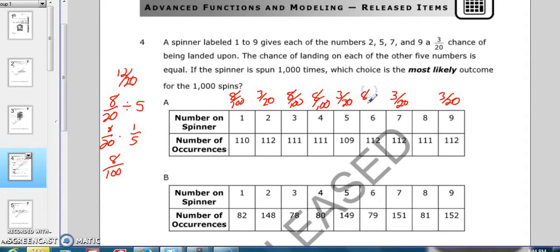And if we want to compare them, we need to change the 3 over 20 to something over 100. Well, 3 over 20 is 15 over 100. So each of those is 15 over 100.